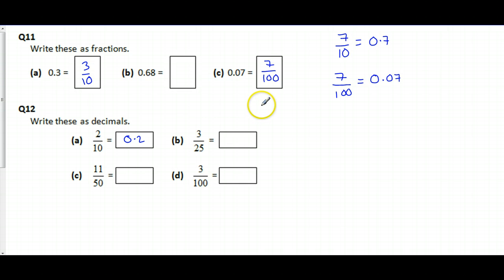And then, so this must be 0.03. Because it can't be the same as that there. Because it's 3 out of 100, not 3 out of 10.